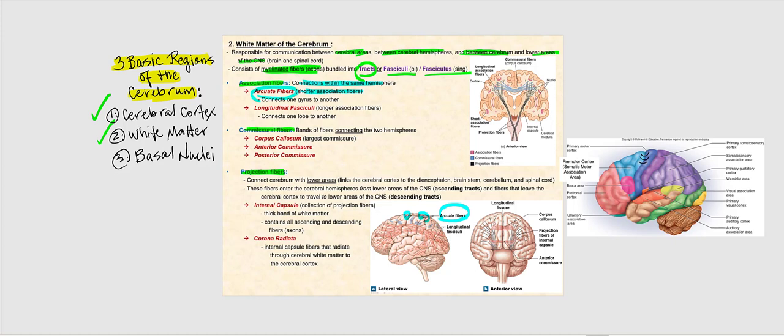Another example of association fibers are the longitudinal fasciculi. These are longer association fibers — the myelinated fibers or axons are much longer than the arcuate fibers — because the longitudinal fasciculi are meant to connect one lobe to another lobe, within the same hemisphere, either the right or left cerebral hemisphere. For example, the prefrontal cortex in the frontal lobe communicates with the primary visual cortex in the occipital lobe through these longer association fibers, the longitudinal fasciculi.